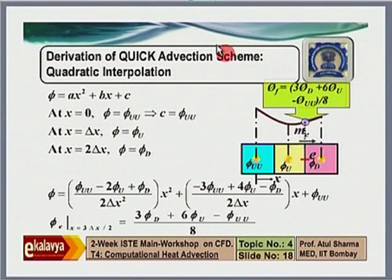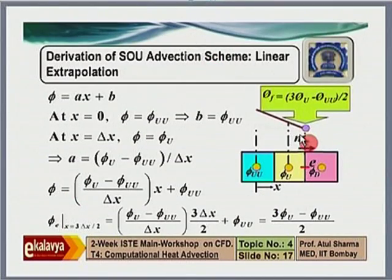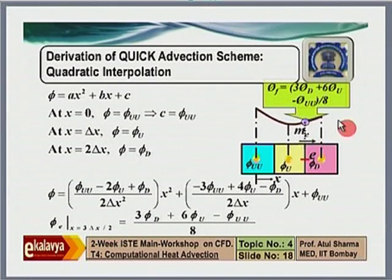The QUICK scheme is applied in a piecewise quadratic manner locally between certain grid points, not globally over the domain. In CFD, conduction used piecewise linear approximation; similarly, second-order upwind uses piecewise linear extrapolation, and QUICK uses piecewise quadratic approximation. This is a local variation taken between specific neighboring grid points.